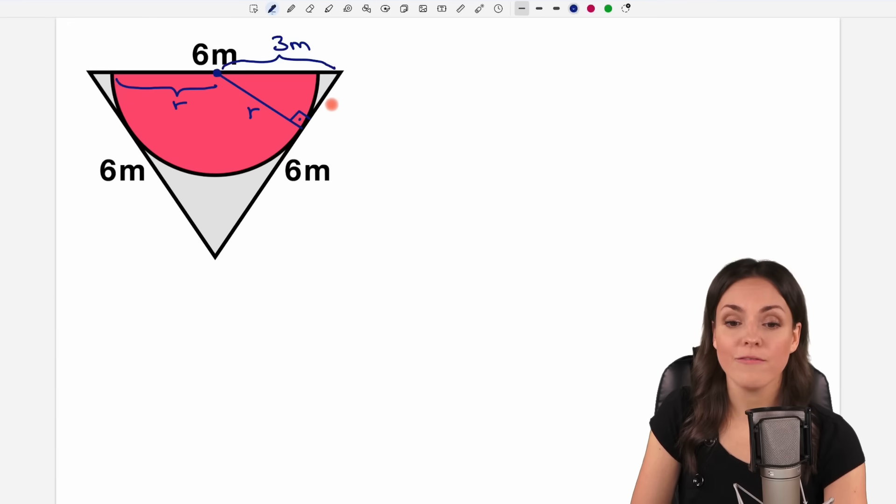But maybe we can find something out about the angles of this large triangle here. And if we take a look at this large triangle then we see that all sides are of equal length. So this is an equilateral triangle which tells us something about the angles in our triangle.